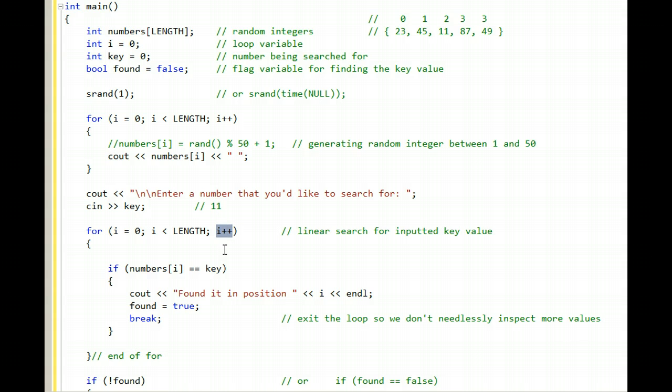i plus pluses, and therefore i is now 1, and we check to see if numbers i, which is 45. The number 45 is stored in numbers i. We check to see if 45 is equal to key, which is 11, and it's not.